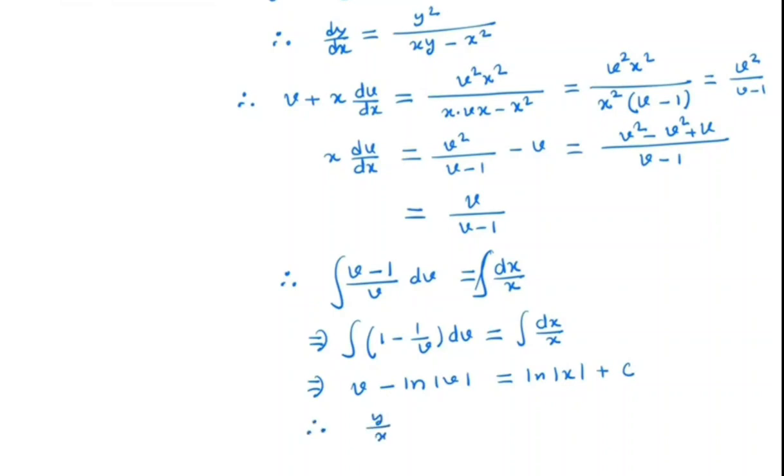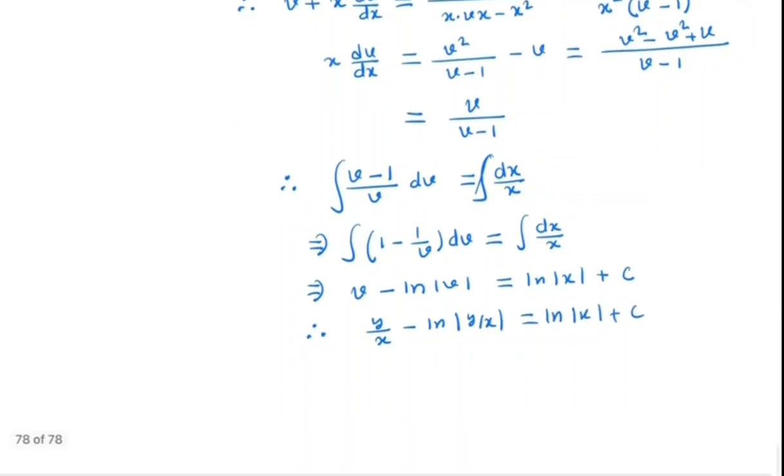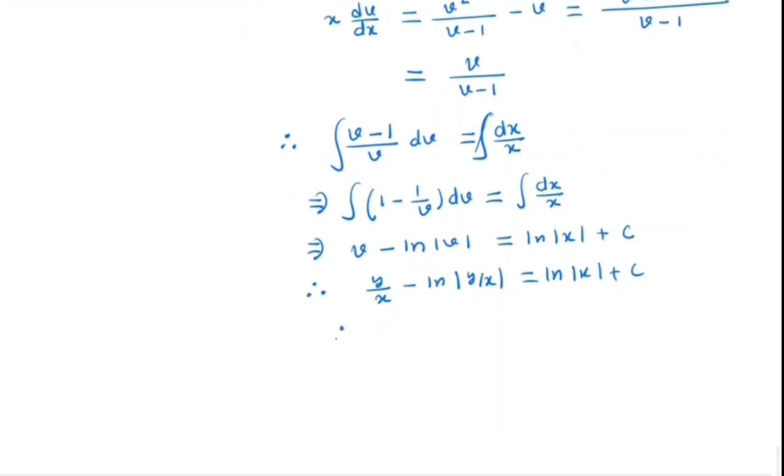What is v? v is nothing but y by x and it is ln y by x which is ln mod x. And if we simplify this ln y by x which will be minus ln y and plus ln x. Because ln y by x is nothing but ln y minus ln x.